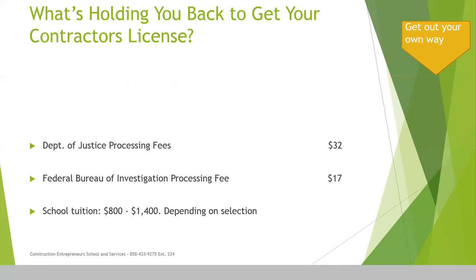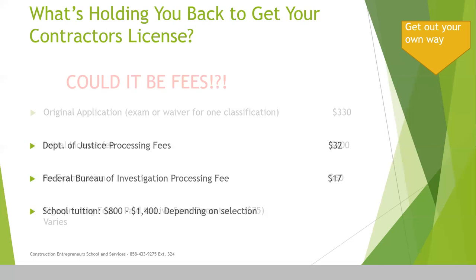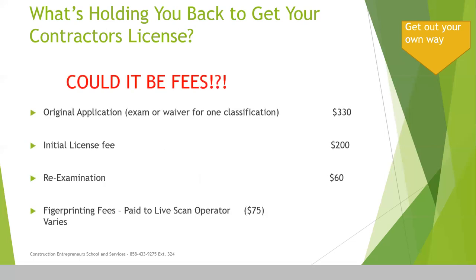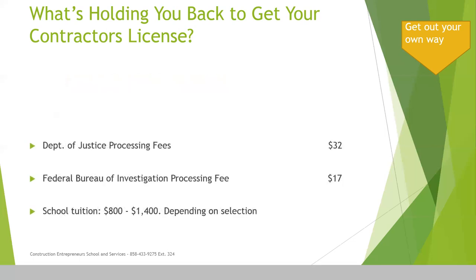The fingerprinting fee — that's what you pay to the live scan operator. The $32 is what you actually pay to the state. The Federal Bureau of Investigation processing fee you also pay to the state. Your school tuition, depending on what school you go to, can range anywhere from $800 to $1,400, depending on what selection and options they have available.